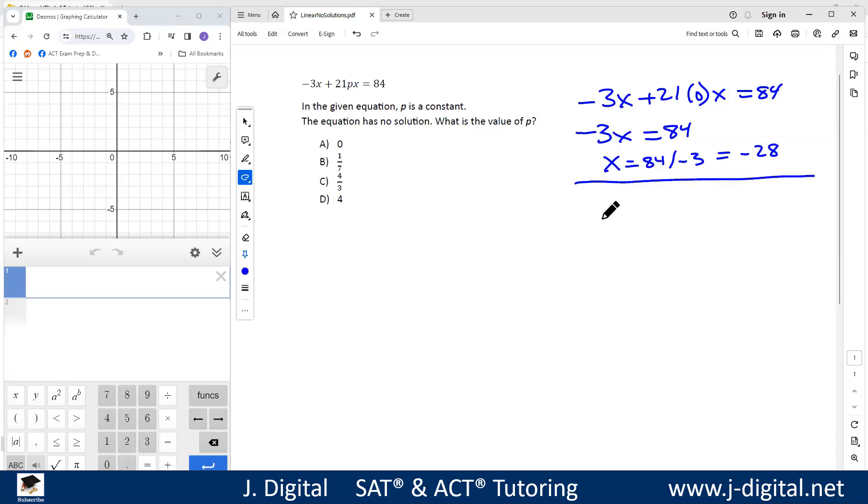Now if we try answer choice B, 1/7, do the same thing: -3x + 21 times 1/7 x = 84. So we have -3x, 21 times 1/7, 21 divided by 7 is 3, so 3x = 84. Negative 3x plus 3x is 0, so you get 0 = 84.